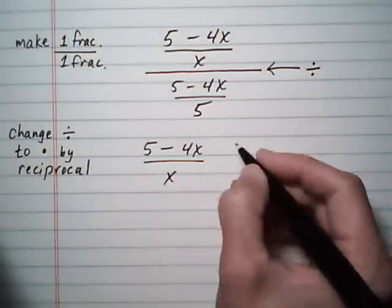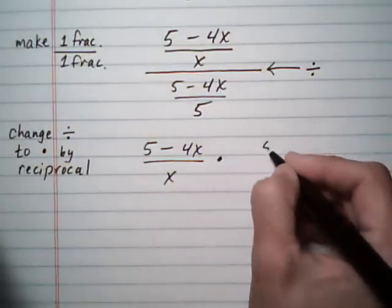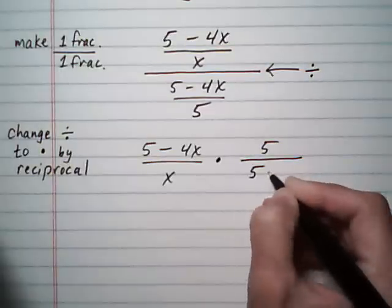So 5 minus 4x over x times, flip the bottom one, 5 over 5 minus 4x.